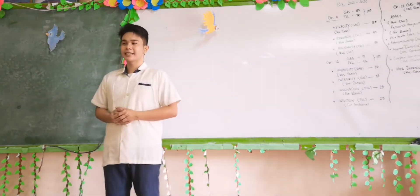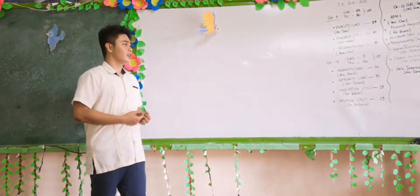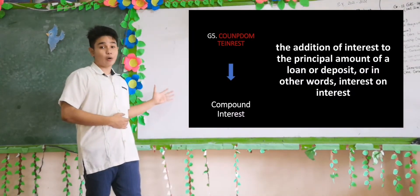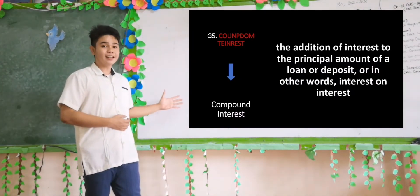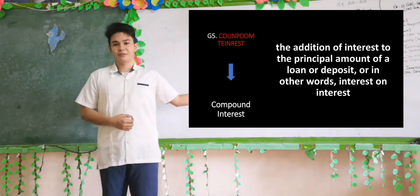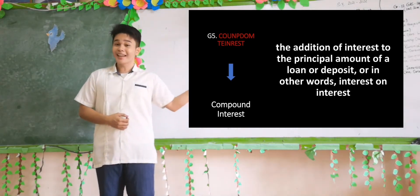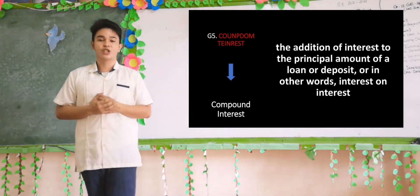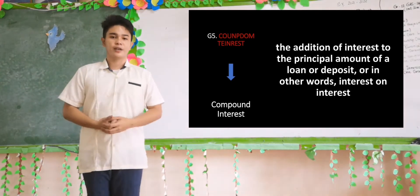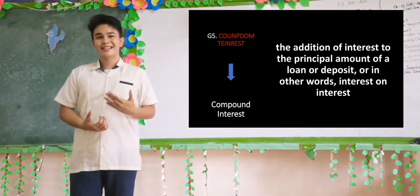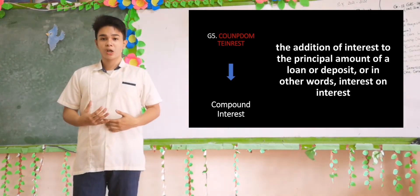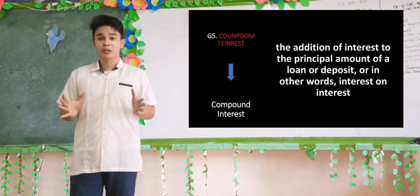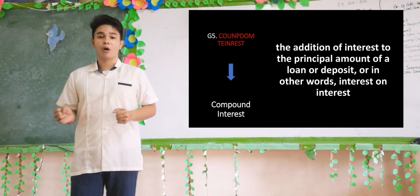And last but not least, group five. Their jumbled words, arranged answer, and definition — compound interest — are once again correct. Compound interest is the addition of interest to the principal amount of a loan or deposit.